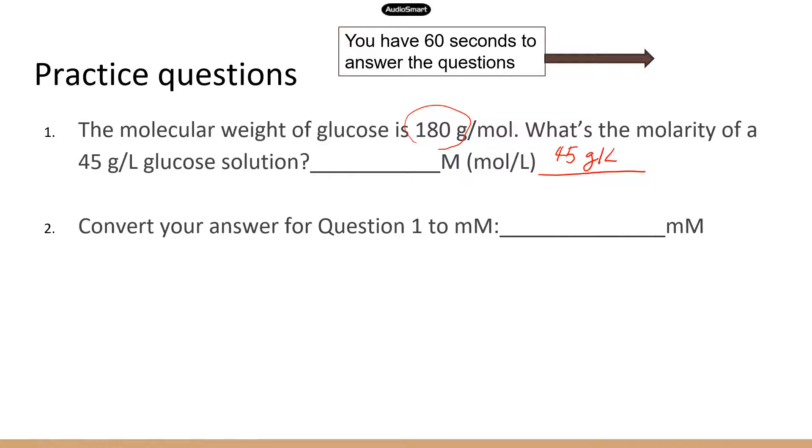In this case, you just need to divide the concentration, which is 45 gram per liter, by 180 grams per mole. Because you have 45 grams of glucose. And one mole of glucose is 180 grams. So 45 divided by 180, that's 0.25. And then gram gram cancelled out. So that's going to be 0.25 mole per liter. And then this can be abbreviated to the big letter M. So the answer is 0.25.